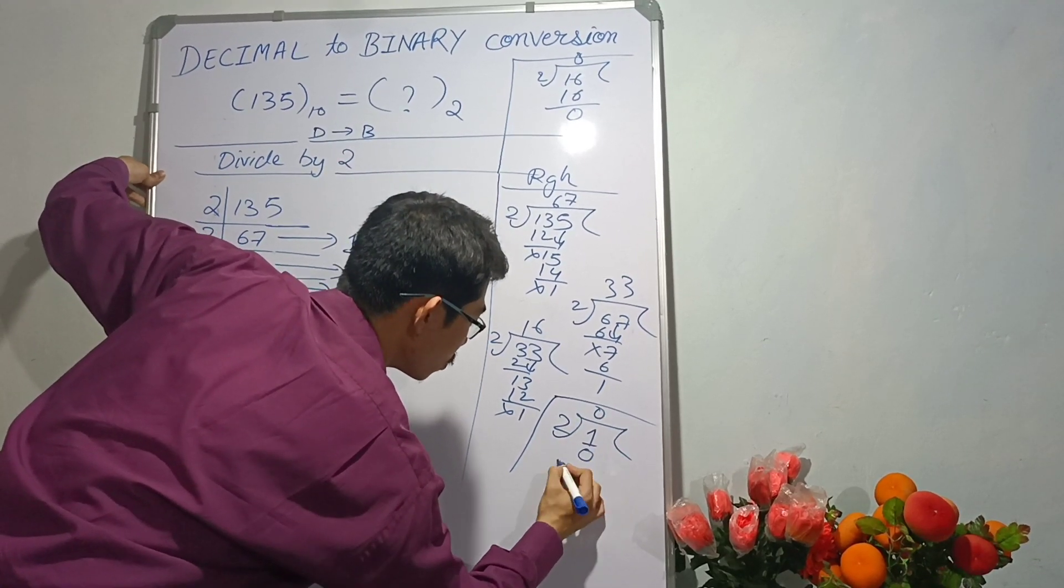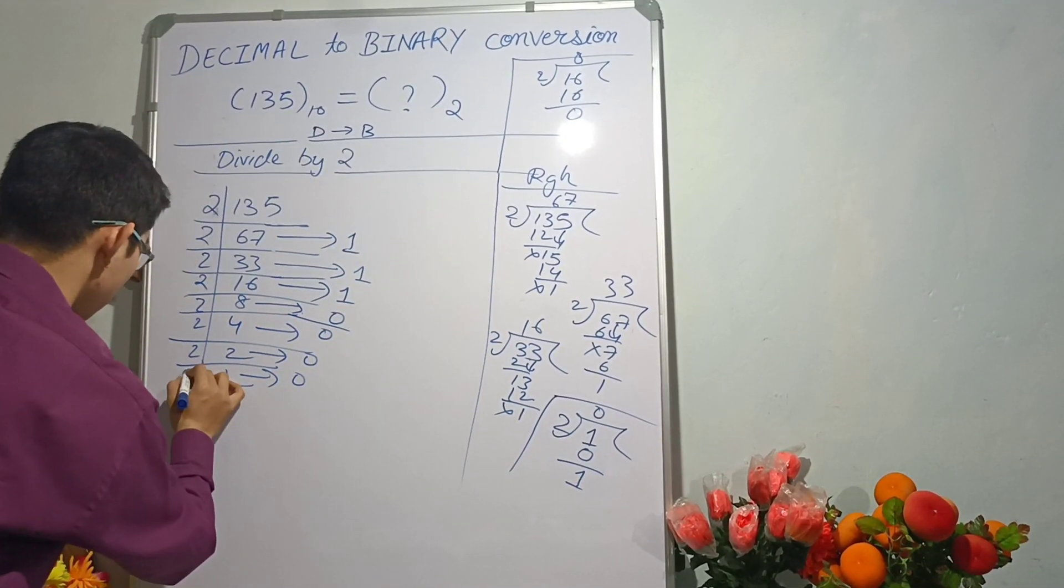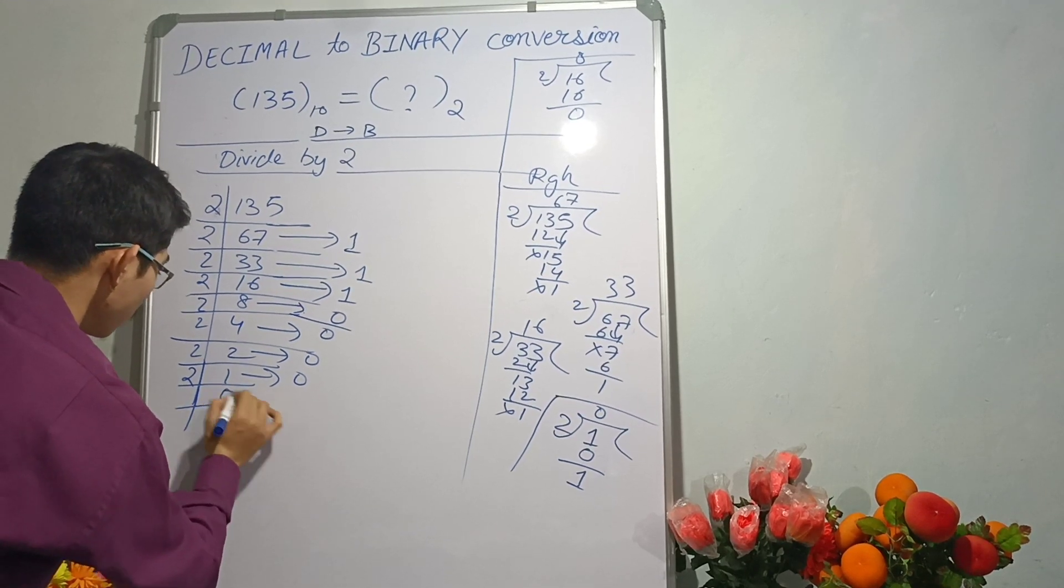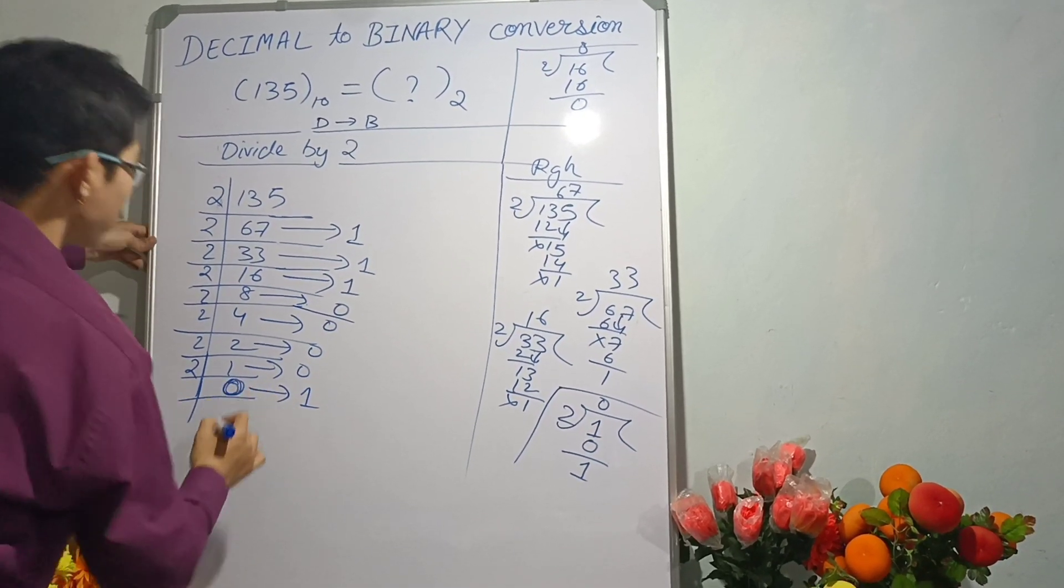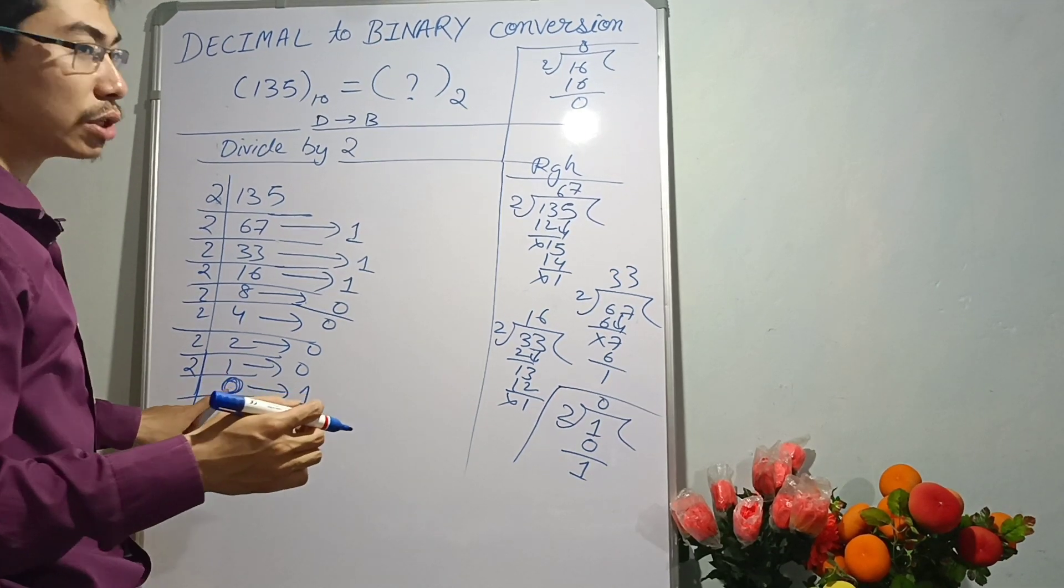2 times 0 is 0, remainder is how much? 1. 2 into 0, remainder is 1. We will not stop until we get 0 here.